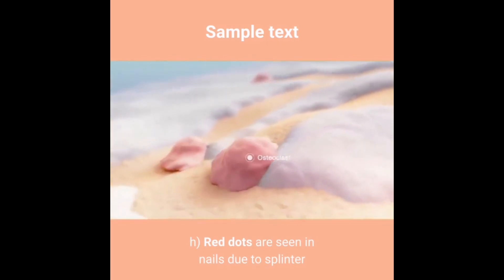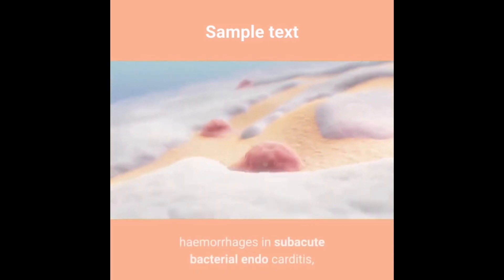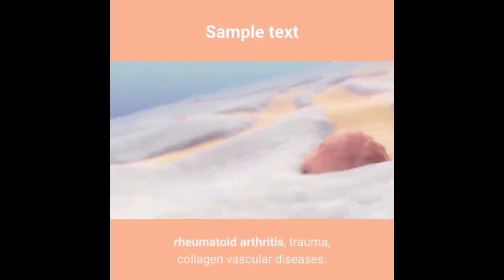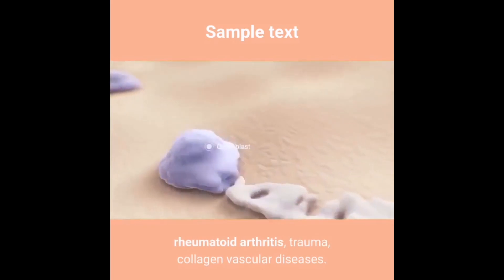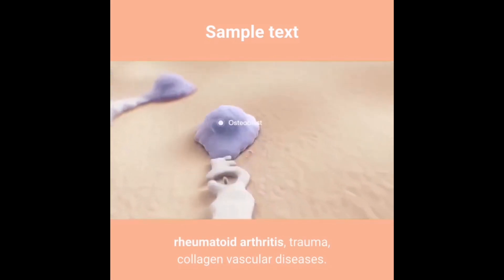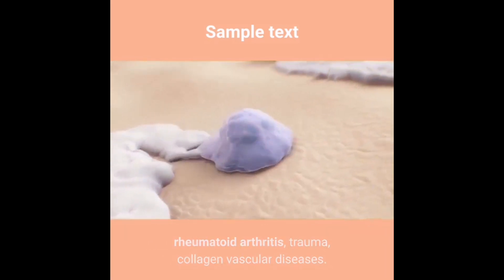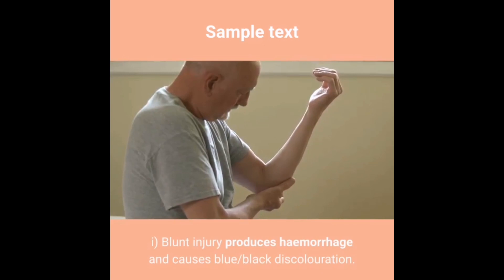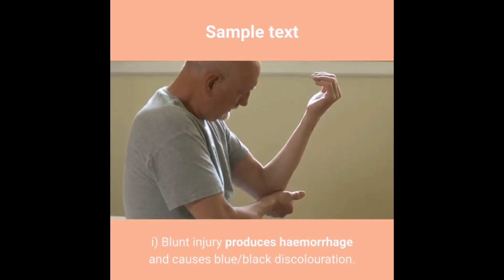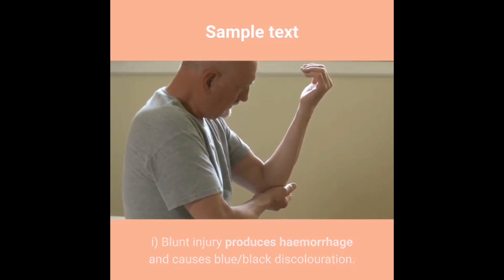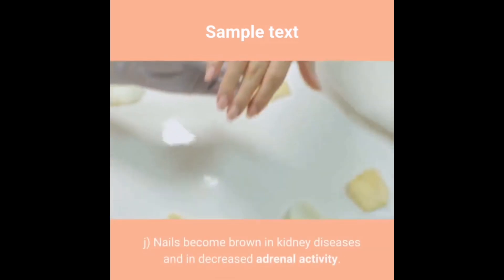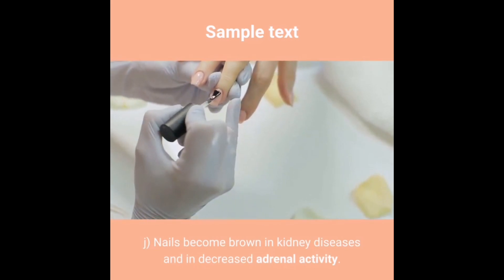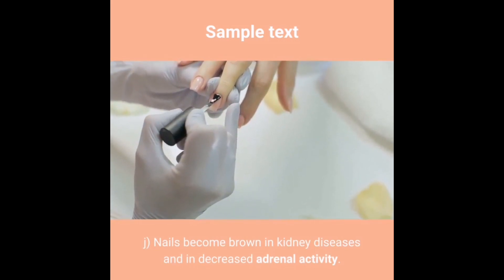H) Red dots are seen in nails due to splinter hemorrhages in subacute bacterial endocarditis, rheumatoid arthritis, trauma, and collagen vascular diseases. I) Blunt injury produces hemorrhage and causes blue-black discoloration. J) Nails become brown in kidney diseases and in decreased adrenal activity.